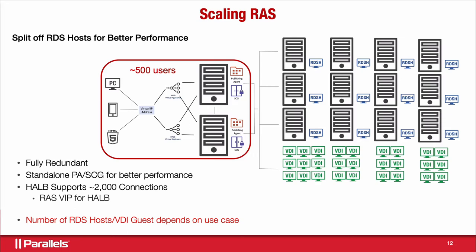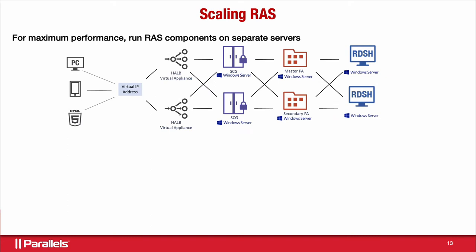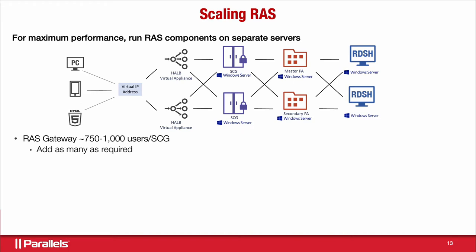To scale more, break all components onto separate servers: load balancers, secure client gateways, publishing agents, and remote desktop servers running independently. A single gateway running by itself can support approximately 750 to 1,000 users, with some customers reaching around 1,200. If you're pushing heavy traffic through it, the number may drop below 750. There's no limit on the number of secure client gateways — keep adding them as needed.